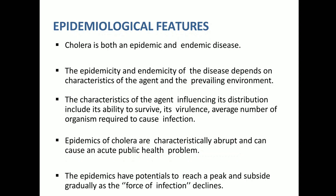Coming to the epidemiological features: cholera can be both epidemic and endemic. The endemicity and epidemic nature depends upon the favorable conditions and the type of organism affecting the patient. The characteristics of the agent influencing its distribution include its ability to survive, its virulence, and the average number of organisms required to cause infection.